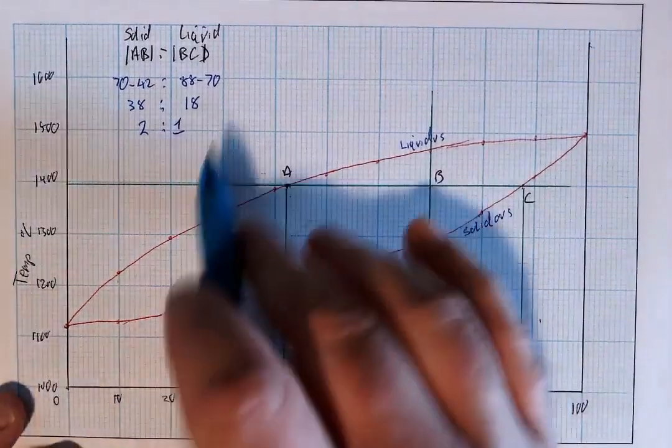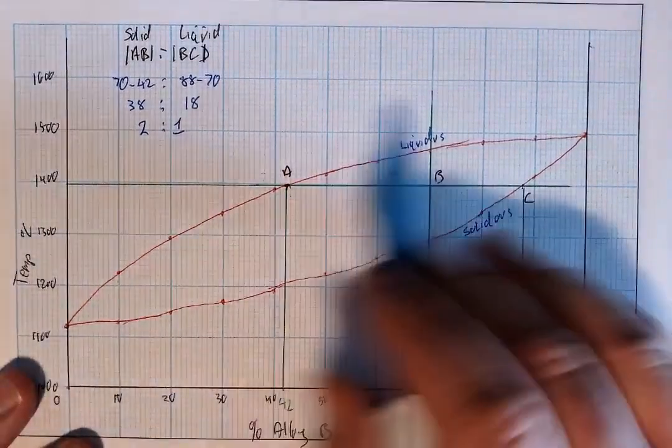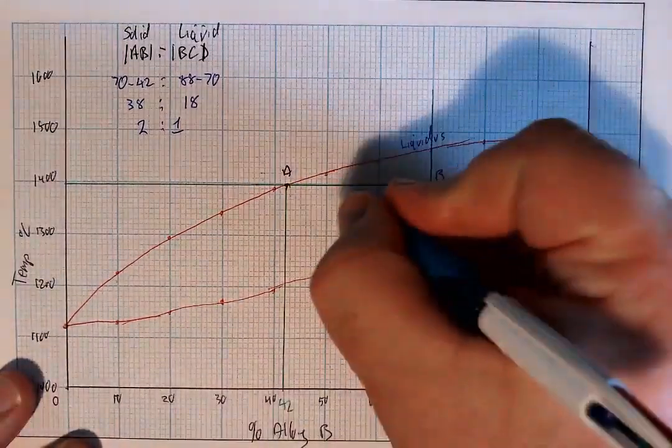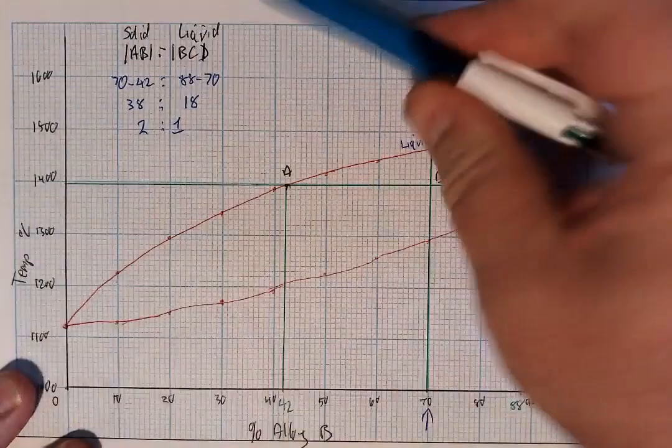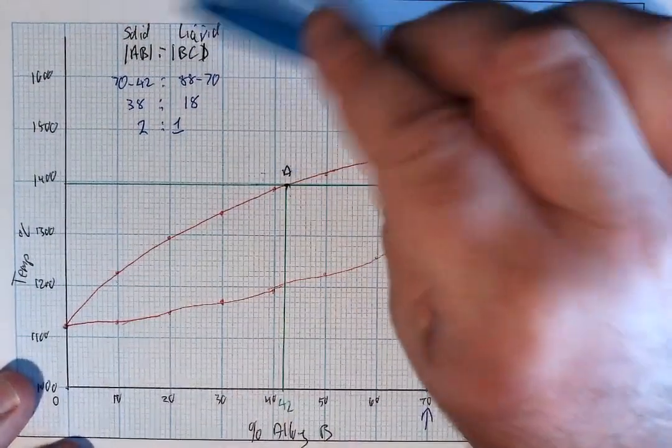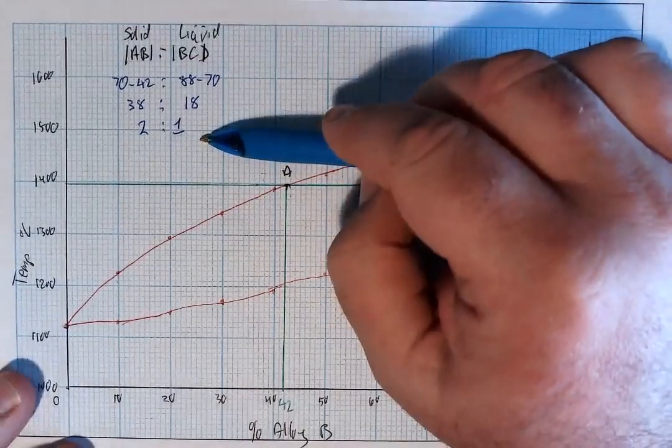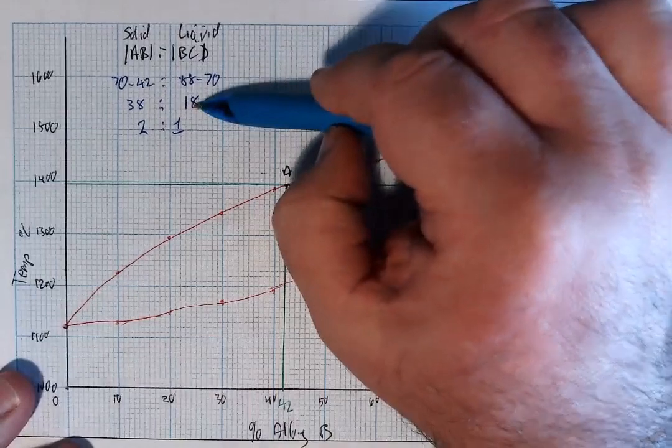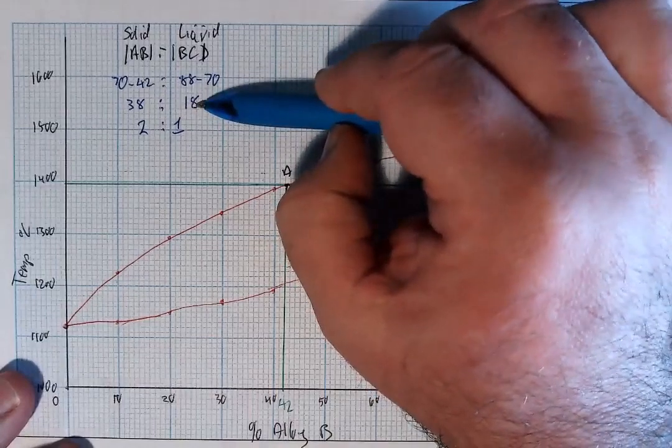Now the important part here is you're asked to determine, if you do this like I've just shown you here, and if you do this step, show the steps you used to arrive at that ratio of 2 is to 1 solid is to liquid. So that if you do happen to make a mistake up here somewhere, you will still get some marks for this particular question.